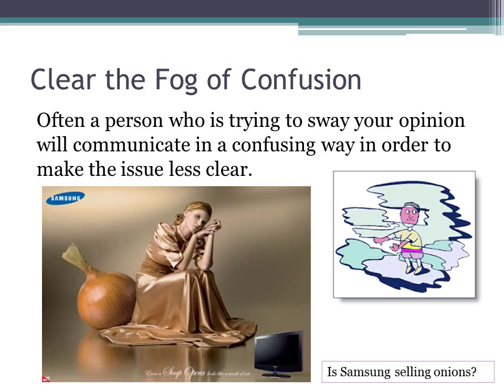We are going to look at advertising because that is one of the most obvious examples. Often a person who is trying to sway your opinion — in other words, persuade you — will communicate in a confusing way to make the issue less clear. In this picture, which is a Samsung ad, there is a woman dressed in a gold-looking dress sitting against an onion. Very small in the bottom right corner is a computer screen, but compared to the size of the onion, it is much, much bigger.